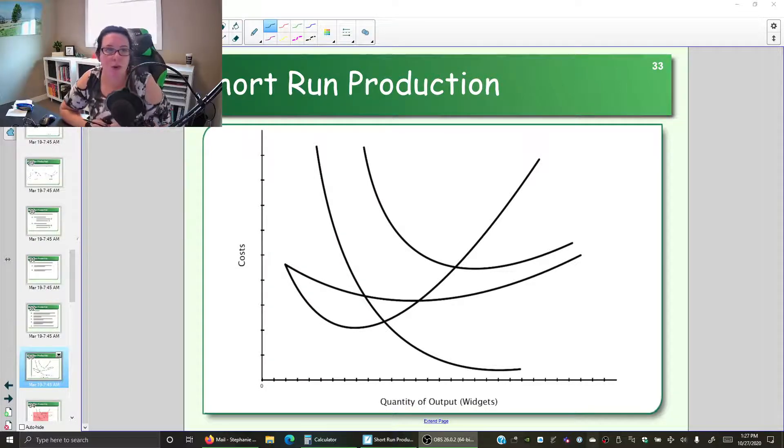We need to produce a number of cost curves. We have costs on our vertical axis, quantity of output—the number of widgets we're producing—on the horizontal. Let's take a moment and label these different curves. Can you look at the parts of the graph and identify which curve is which based on its shape, and can you explain why it has that shape?